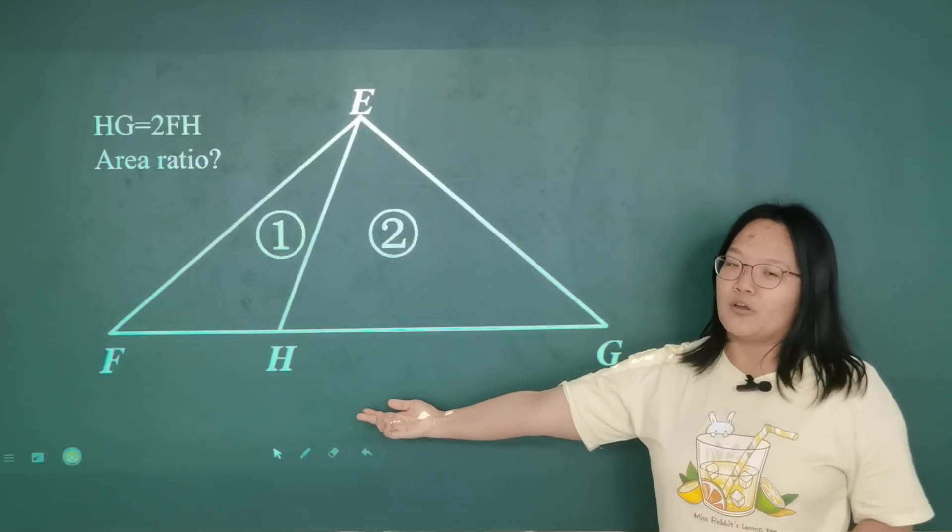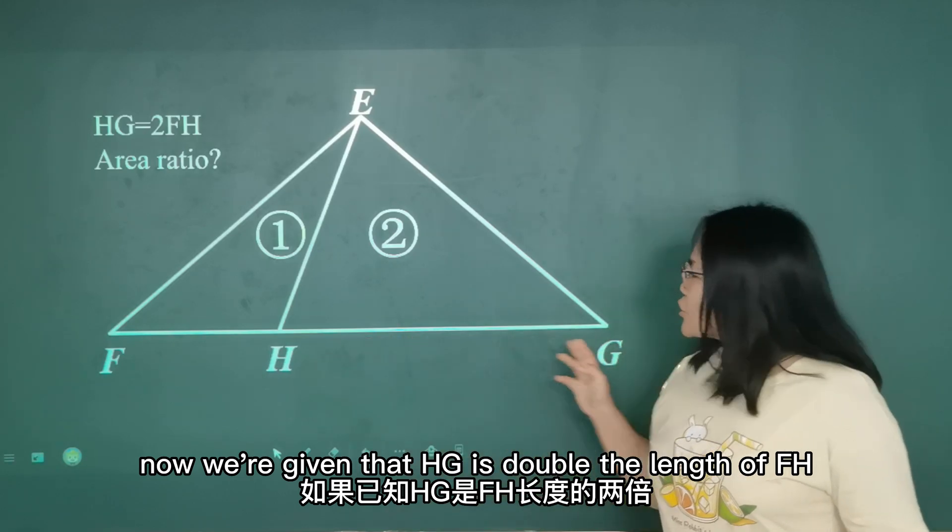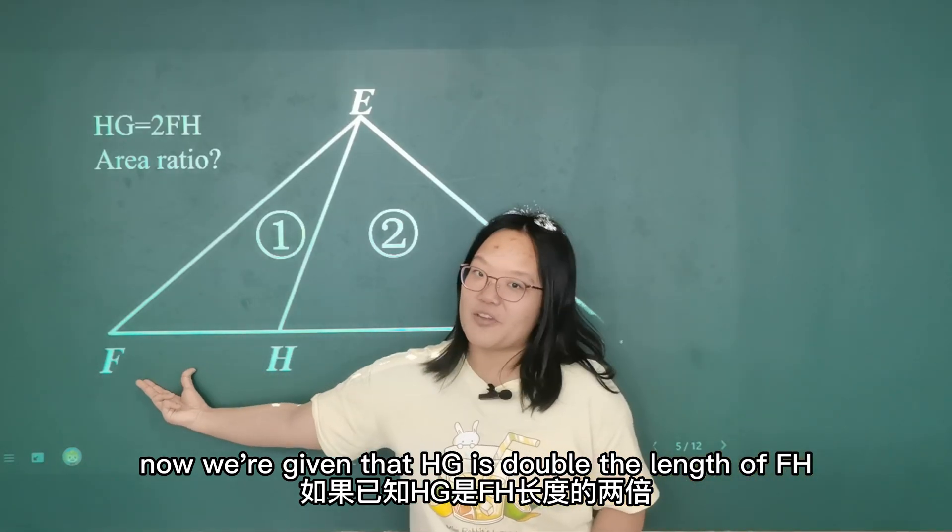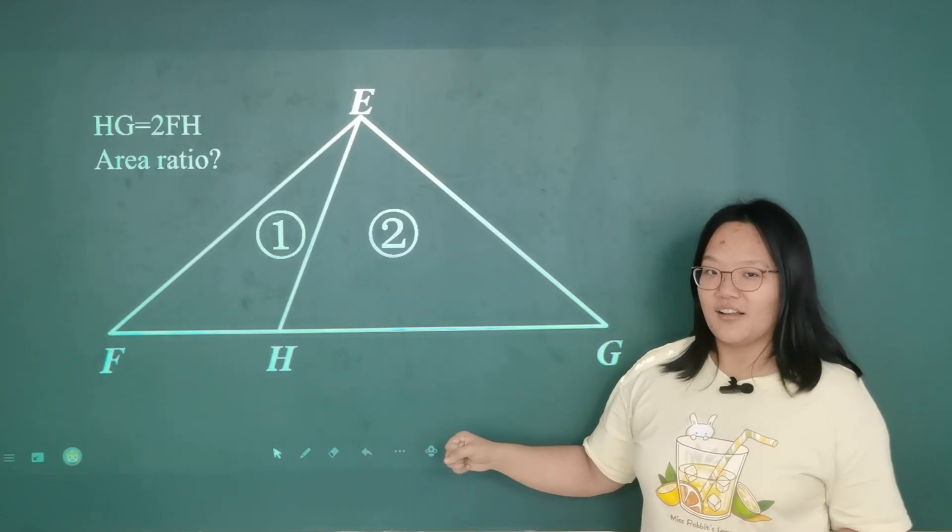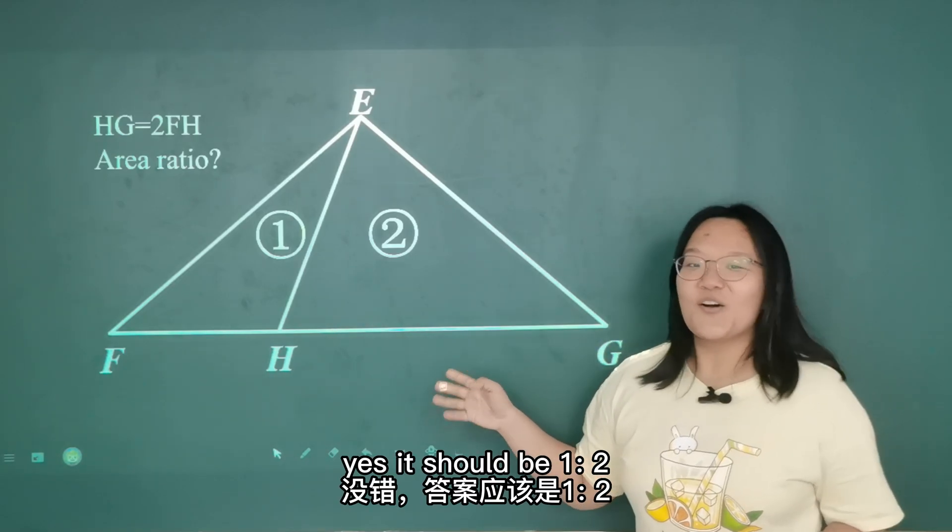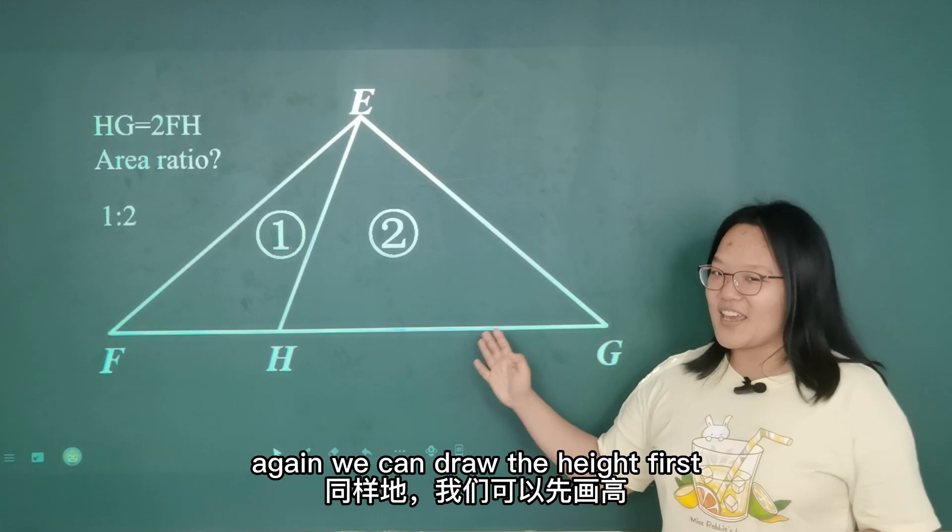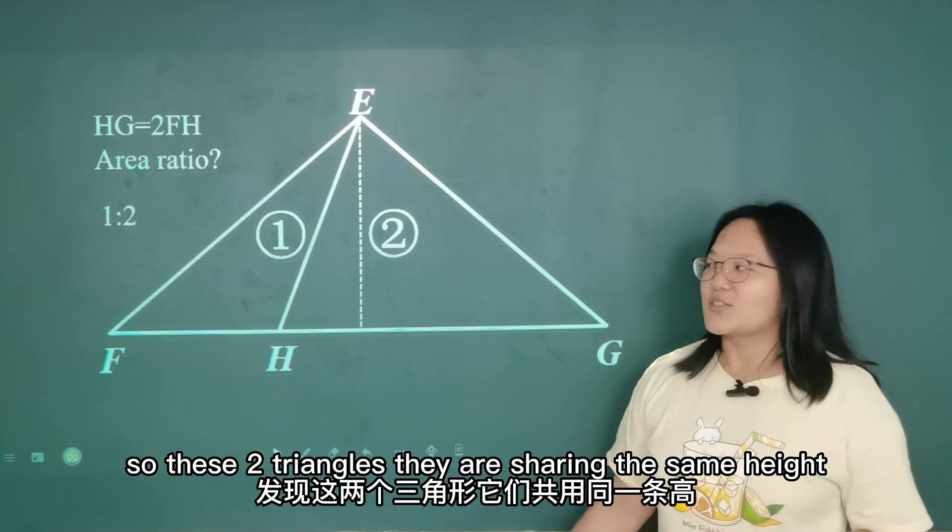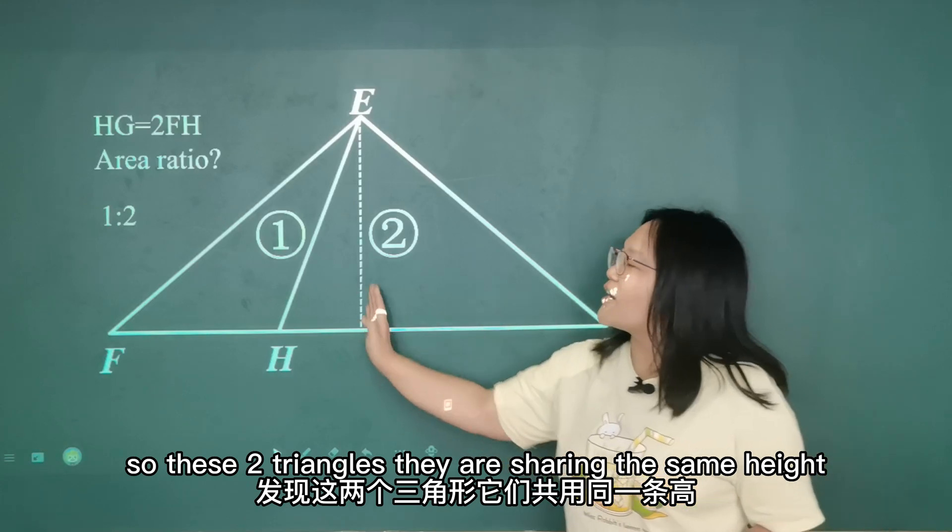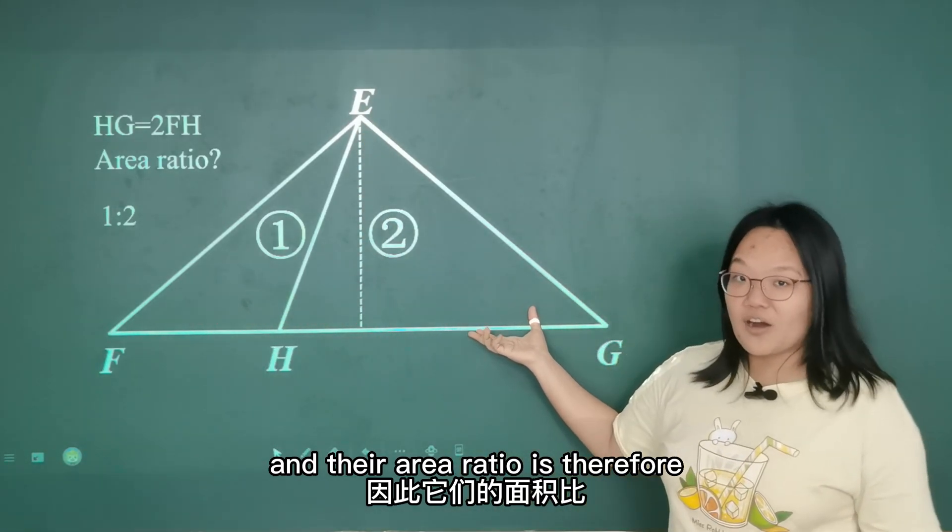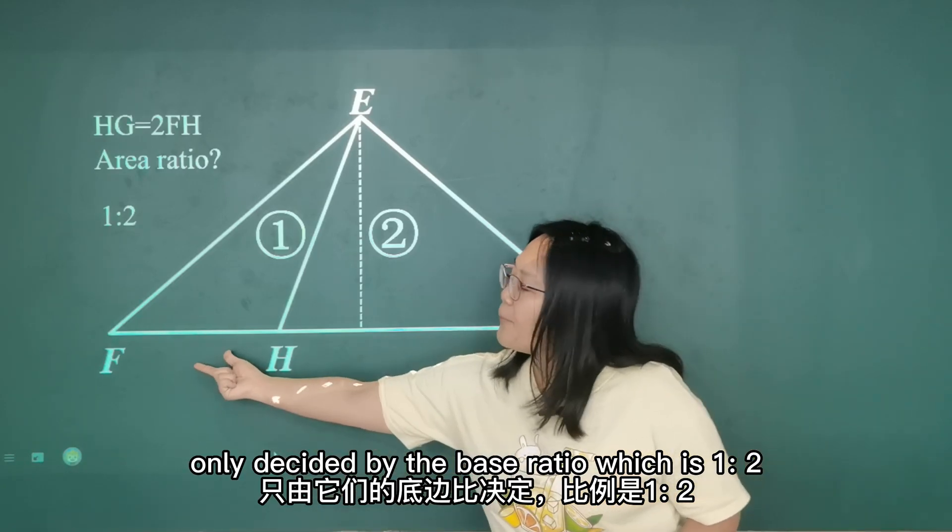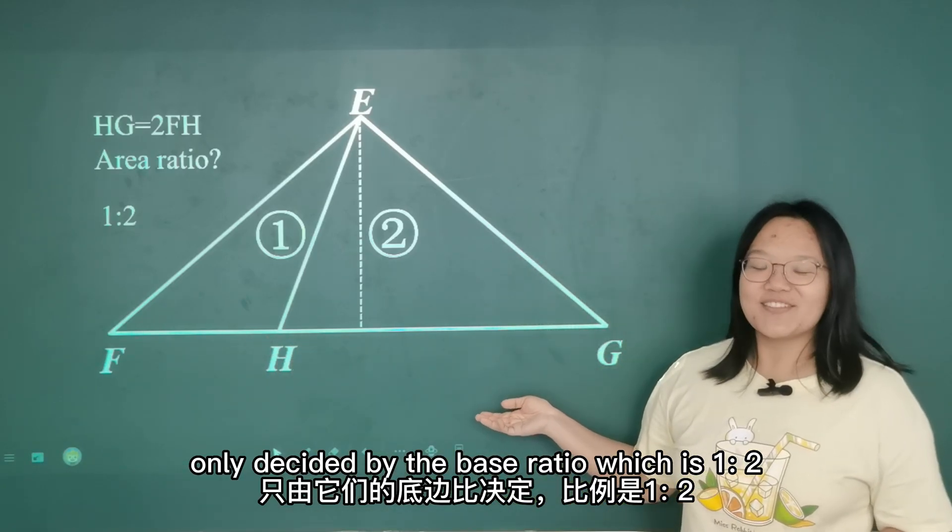How about this example? Now we are given that HG is double the length of FH. Can you find the area ratio here? Yes, it should be 1 to 2. Again, we can draw the height first. So these two triangles, they are sharing the same height. And their area ratio is therefore only decided by their base ratio, which is 1 to 2.